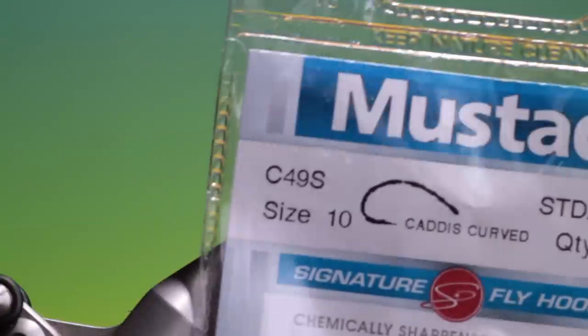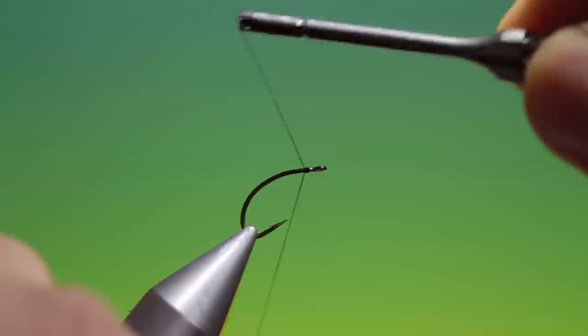Okay we'll start with the Mustard C49S size 10. This is a Wally wing emerger and just attach a little bit of tying thread at the front here, you don't need much at all.